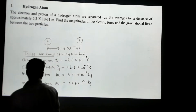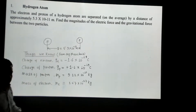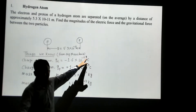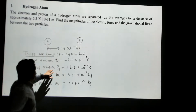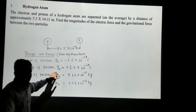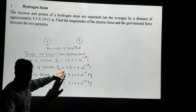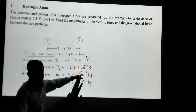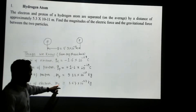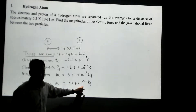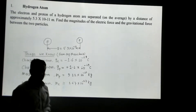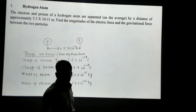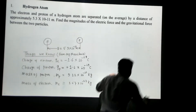Here are a few things you need to know, which you can find in any physics book. The charge of the electron is negative 1.6×10⁻¹⁹ coulombs. The charge of the proton is exactly the same magnitude but positive. The mass of the proton is 1.67×10⁻²⁷ kilograms, and the mass of the electron is 9.11×10⁻³¹ kilograms.